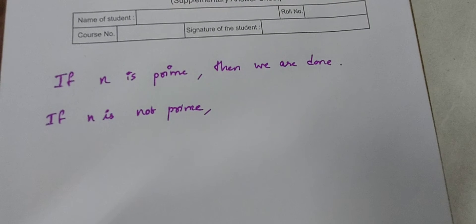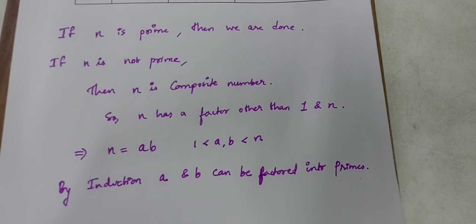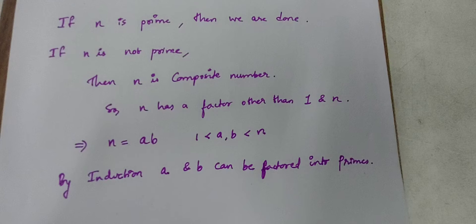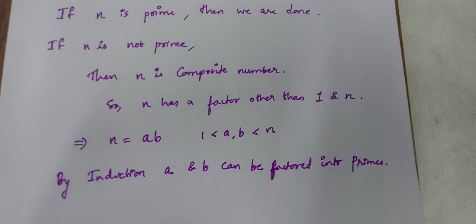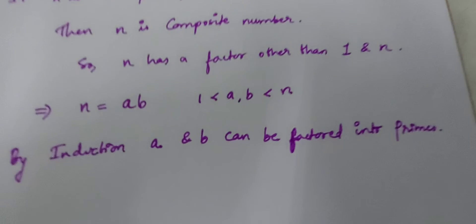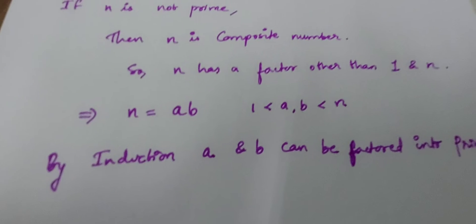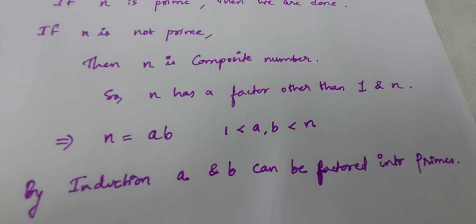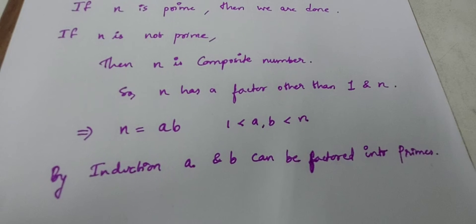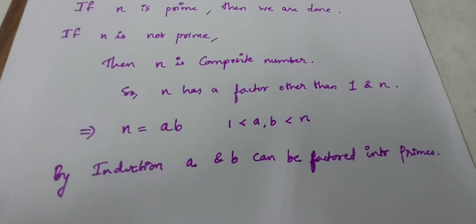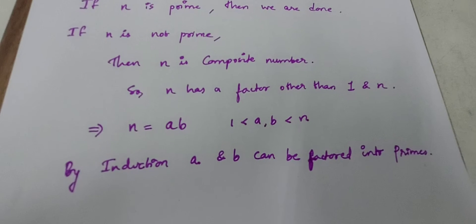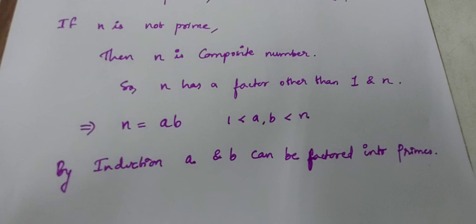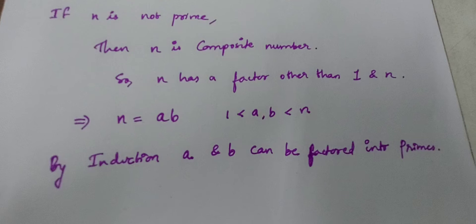Now if n is not prime, that means n is a composite number, which means it has a factor other than 1 and n. So we can write n equal to a·b, where a and b are numbers strictly between 1 and n. Now a and b can be either prime or composite. The key observation is that a and b are less than n, and by induction we have assumed the statement holds for all numbers less than n. So a and b can each be prime factorized — written as a product of primes or as primes themselves. Therefore, since n = a·b, we have the prime factorization for n. That is how we prove the existence part using strong induction.